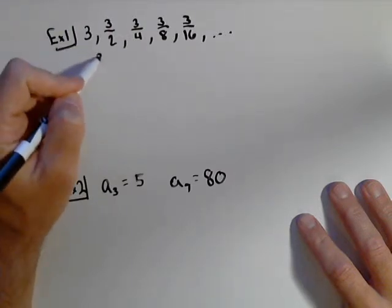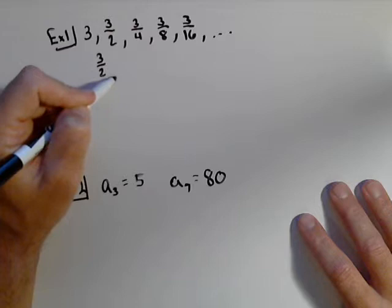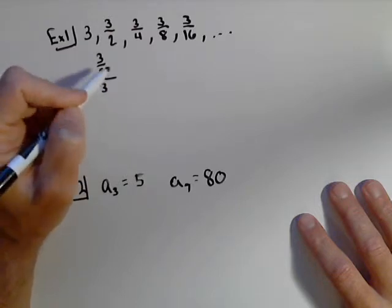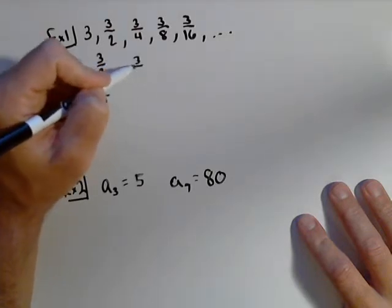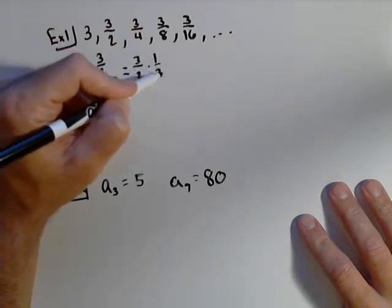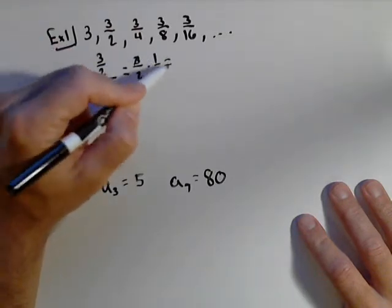What we'd do, if we weren't sure, we'd take three halves and divide it by three. Which is, remember, that's the same thing as three halves times one third. Or, cancel those three, is one half.